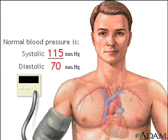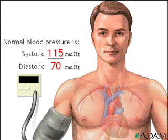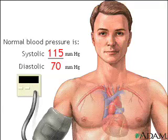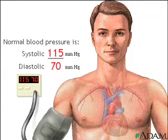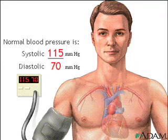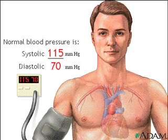A systolic blood pressure of 115 mmHg is considered in the range of normal blood pressures, as is a diastolic pressure of 70. In common terms, this normal measurement would be stated as 115 over 70.